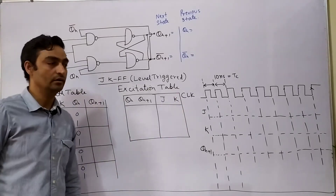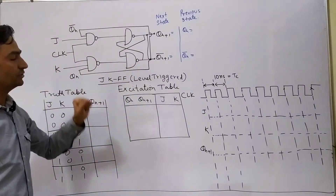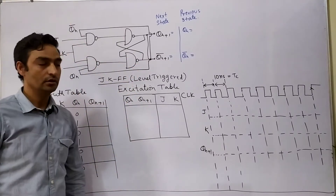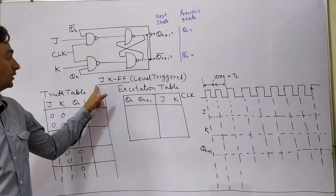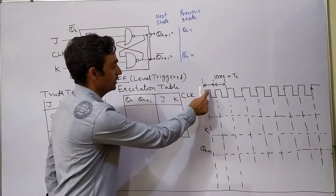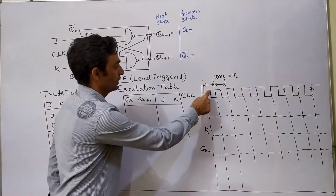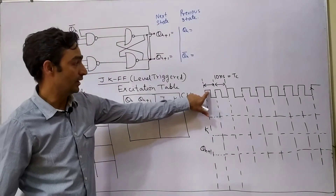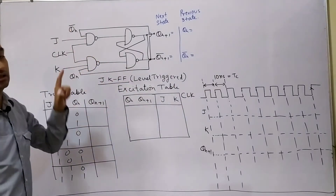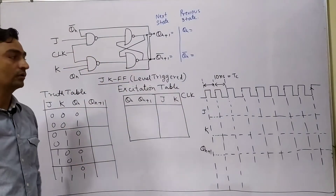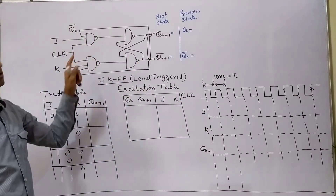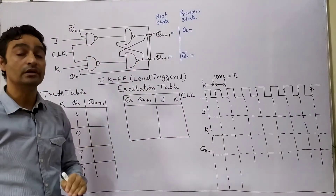Let us first understand the diagram of JK flip-flop which is level-triggered. The flip-flop input clock we are using is not edge-triggered, rather it is level-triggered. Whenever logic high is coming at the clock, only then this circuit is working; otherwise it is not working. With edge, this circuit does not trigger — this is a level-triggered circuit.